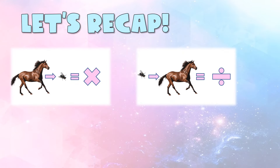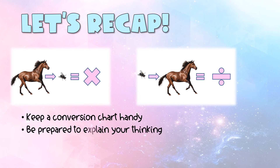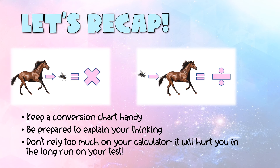Let's recap: horse to fly, multiply — going from a big unit to a small unit, multiply by the conversion unit. Fly to horse, divide of course — going from small to big, divide by the conversion unit. Keep your conversion chart handy and be prepared to explain your thinking. Don't rely too much on your calculator — it could hurt you on tests. You may also want to re-watch the videos on the J method and decimal and fraction multiplication. Good luck, and we'll watch another video tomorrow on double conversions!